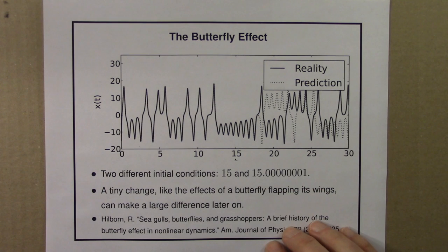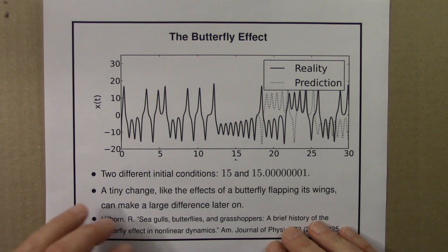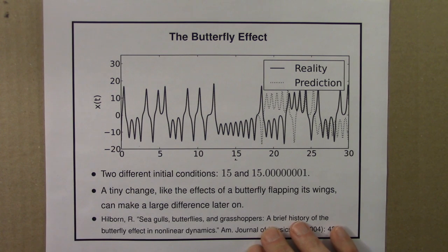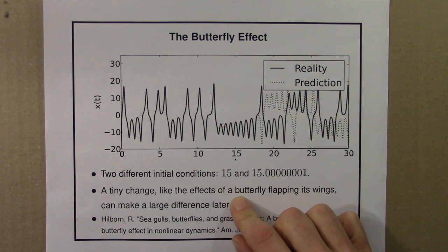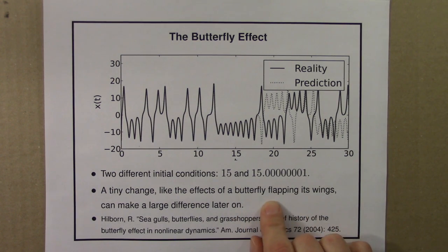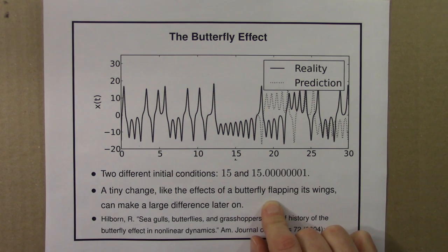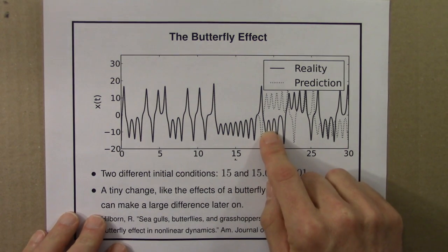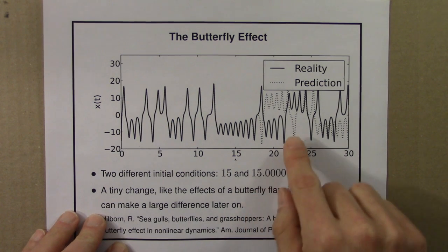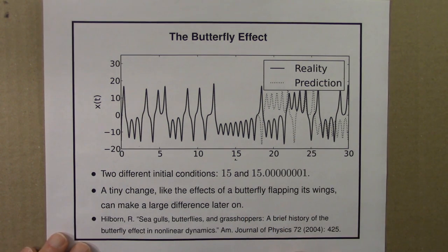The idea that we have these sort of sudden decision points is a fairly commonplace one. But in a system that has sensitive dependence on initial conditions, it's as if every moment is a decision point. At every moment the future trajectory is poised between possible different futures, and the difference between those is a tiny little gust of wind from a butterfly flapping its wings that determines which path it will go on. So it's this continuous sensitivity where at every point along the journey a tiny change can make a big change later on, and there's no way to know what those changes will be.